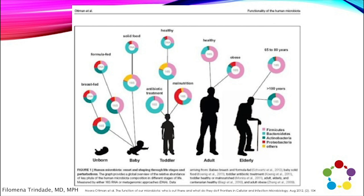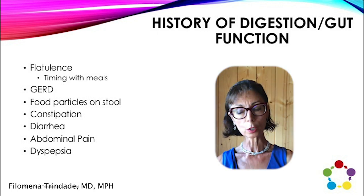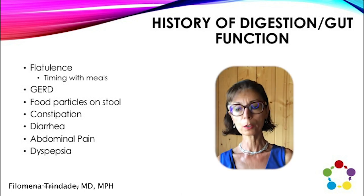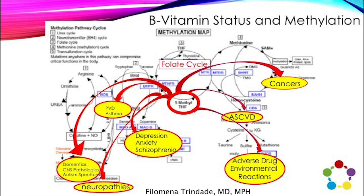When obtaining a history, ask what happened to the mother while carrying the patient, what was the birth like — vaginal or c-section — was the patient breastfed, and were they exposed to antibiotics or hospitalizations early on? We want to get an idea of the gut microbiota. Ask about digestion dysfunction or gut problems: gastroesophageal reflux, flatulence, abdominal pain, constipation, diarrhea. Also get an idea of their B vitamin status — ask about cancer in the family, vasculopathies, dementia, or neurodegenerative disorders.